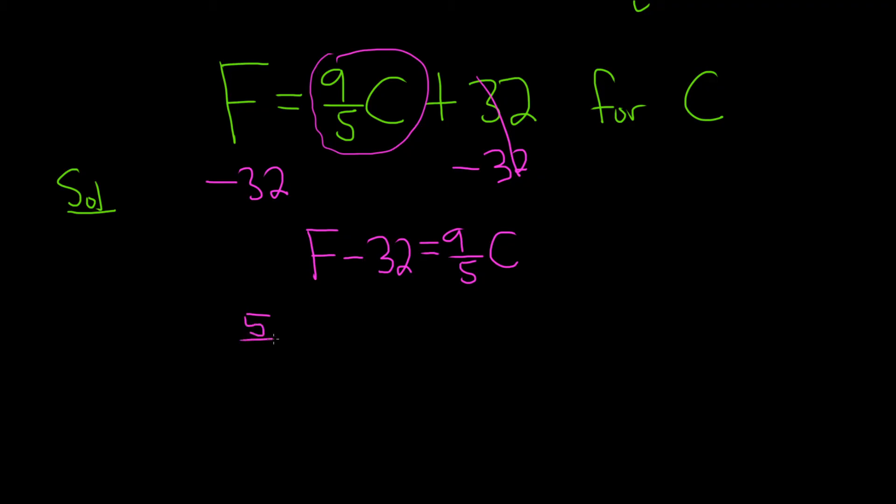So 5 ninths, and then parentheses, right, the whole side is being multiplied. It's important to have the parentheses. Equals 5 ninths, and then here we have 9 fifths c. And this cancels this one, and the 5 cancels here.